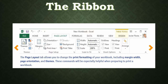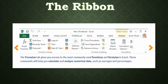The Page Layout tab allows you to change the print formatting of your workbook, including margins, width, page orientation, and themes — especially helpful when preparing to print. Don't forget that the little arrows in the corner of command boxes mean there's more involved — pushing on those opens a bigger dialog with more options. The Formulas tab gives you access to the most commonly used functions and formulas in Excel, helping you calculate and analyze numerical data such as averages and percentages. We're not going to get into a whole lot of formulas during this particular class, but future classes will cover functions and formulas.